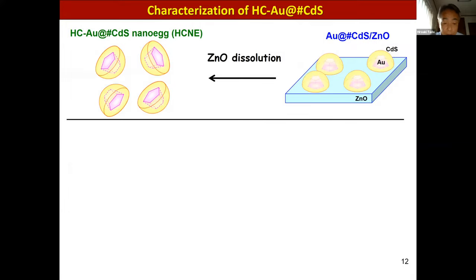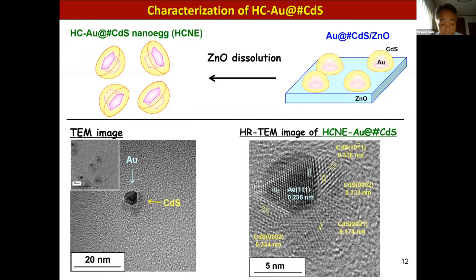Further, by dissolving the ZnO support, we can obtain a unique hetero-nanostructure, which we call a half-cut Au core CdS shell nanoegg. These are TEM and high-resolution TEM images for the sample. As you can see, half-cut Au core CdS shell nanoeggs are produced, and importantly the heteroepitaxial junction is maintained.